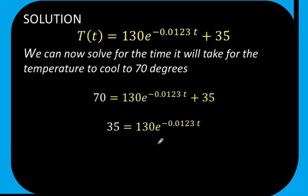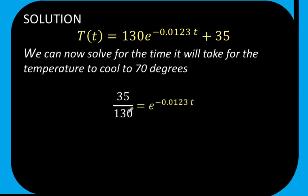First, we subtract 35 from both sides to get 35 equals 130 e raised to negative 0.0123 t. Then we divide both sides by 130, and then we take the natural logarithms of both sides to arrive at this form.